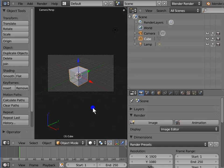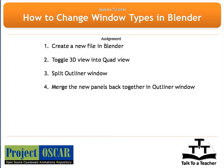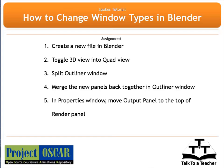So this is how we resize any window, toggle between different windows, and split the windows and merge them back together in Blender. Now, create a new file and try to toggle the 3D view into Quad view. Split the Outliner window and merge the new panels back. In the Properties window, move the Output panel to the top of the Render panel. And maximize the 3D view into full screen mode.